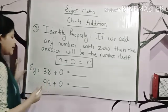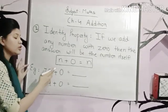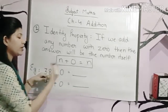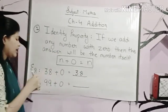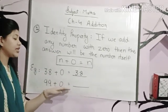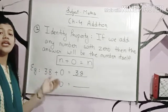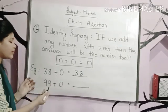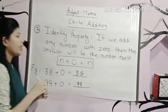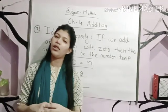In the same way, whenever we add any number with 0, the answer will be the number itself. For example: 38 plus 0 — the answer will be 38 itself. Let's come to the next example: 99 plus 0 is equal to 99. The answer will be the number itself. I hope this property is clear to you all.